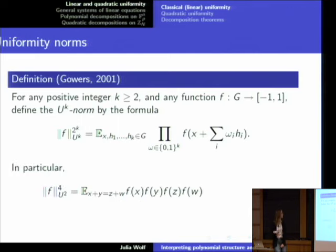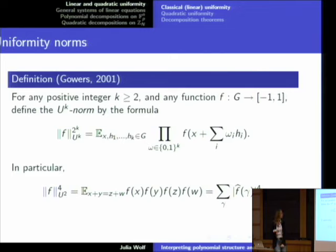In particular, for k equals 2, you recover the following expression. You're taking averages over all so-called additive quadruples in F. And if you expand them using the traditional discrete Fourier transform, what you end up getting is just the L4 norm of the Fourier transform. So you see that the U2 norm corresponds to the level of traditional Fourier analysis.